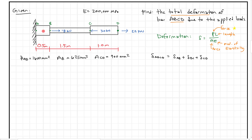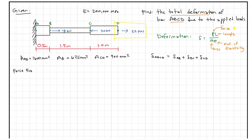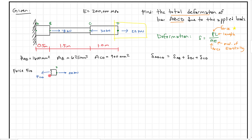Let's find the bar forces in AB, BC, and CD using free body diagrams. For the force in CD, I'll call this FCD. I'll cut through the member and draw a free body diagram of everything in the cut region. I'll have joint D, the cut surface, and the 22 kilonewtons force. With a one-dimensional system, shear and moment don't exist, so I'll just write the sum of forces in the X direction equals zero, with rightward positive.